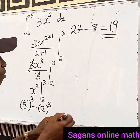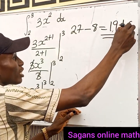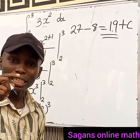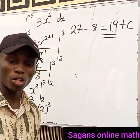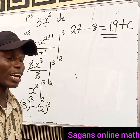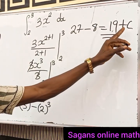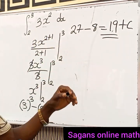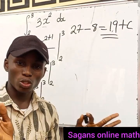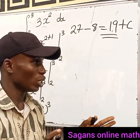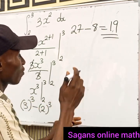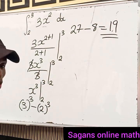Some people will ask why we don't add plus C. This is a definite integral, not an indefinite integral. In indefinite integration you add the constant C, but in definite integration you have your upper and lower limits — you cannot introduce the constant C. So remove it, and this is the answer.